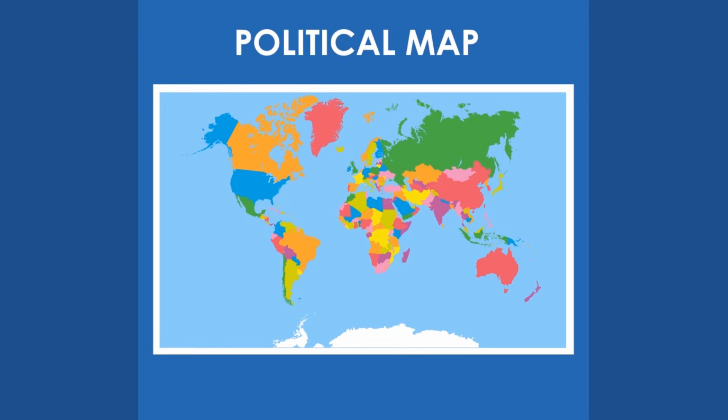A political map shows the boundaries between countries and provinces. The most important cities may be shown as well, such as the capitals.